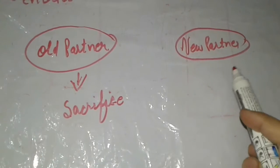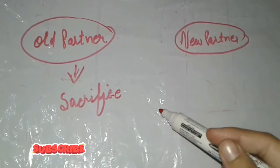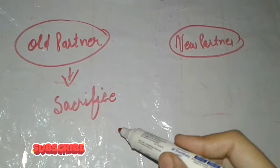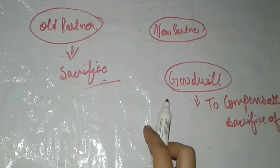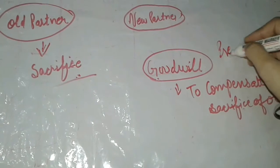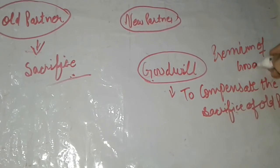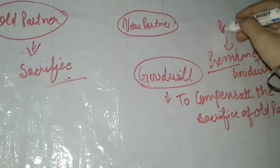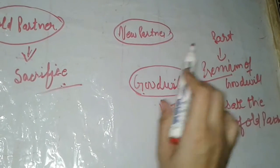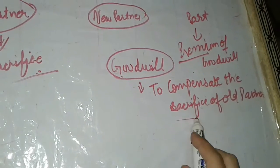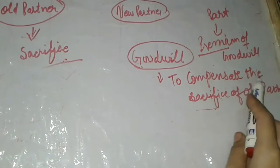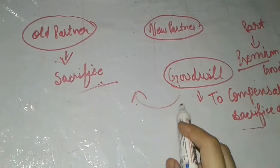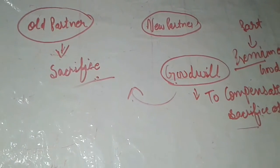As you know, on the admission of a new partner, the old partners sacrifice their share in favor of the new partner. The new partner compensates for this sacrifice in the form of goodwill. The new partner brings a part of goodwill — known as premium of goodwill — to compensate the sacrifice made by old partners. For this, the adjustment of goodwill is made in our books of account.